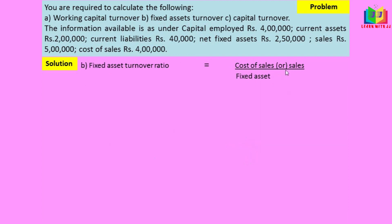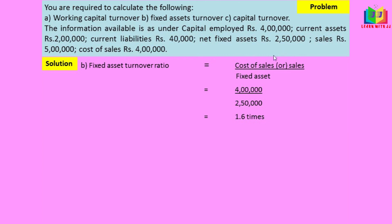Next is fixed asset turnover ratio. Formula is cost of sales or sales divided by net fixed assets. Using cost of sales: 4 lakh divided by 2 lakh 50,000 equals 1.6 times. Alternatively, using sales: 5 lakh divided by 2 lakh 50,000 can also be used. Preference is given to cost of sales; use sales only if cost of sales is not available.